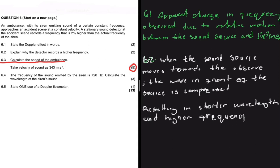For 6.2, let's explain why the detector records a higher frequency. We have an ambulance with its siren emitting sound of a certain constant frequency as it approaches an accident scene at a constant velocity. A stationary sound detector at the accident scene records a frequency that is 2% higher than the actual frequency of the siren — the observed frequency is higher than the emitted. The ambulance is clearly moving towards the listener.